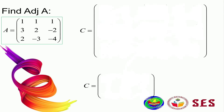Next we need to find the adjoint of A. Remember how to find the adjoint: find the cofactor matrix and then transpose it. First we need to find the cofactor matrix. You can pause this video and try to find the cofactor matrix of matrix A.